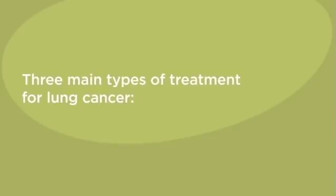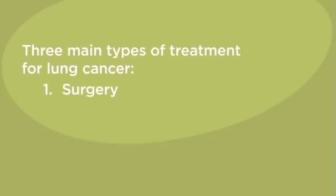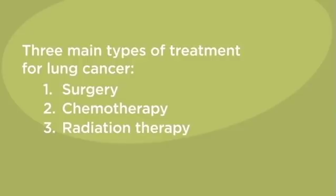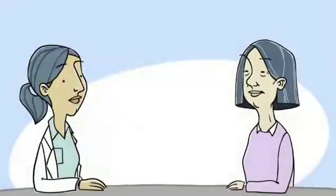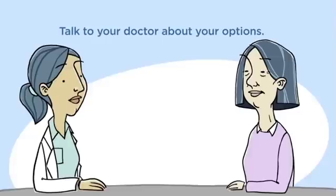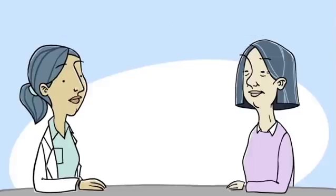There are three main types of treatment for lung cancer: thoracic surgery, chemotherapy, and radiation therapy. You can talk to your doctor about these options, and they'll explain the goals of each. In this video, we'll focus on the surgery option — more specifically, thoracic lobectomy.